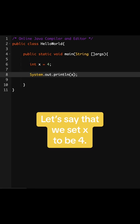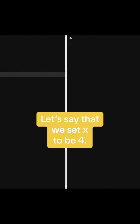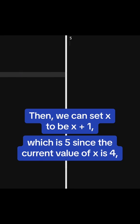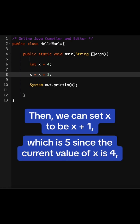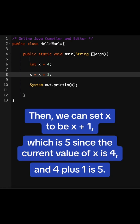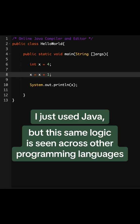Here's an example with code. Let's say that we set x to be 4. Then, we can set x to be x plus 1, which is 5, since the current value of x is 4, and 4 plus 1 is 5. I just used Java, but this same logic is seen across other programming languages, like Python.